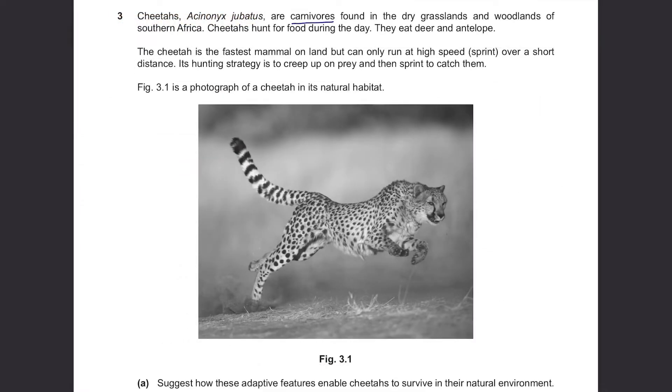Cheetahs are carnivores found in the dry grasslands and woodlands of southern Africa. Cheetahs hunt for food during the day. They eat deer and antelope. The cheetah is the fastest mammal on land but can only run at high speed sprint over a short distance. Its hunting strategy is to creep up on prey and then sprint to catch them.